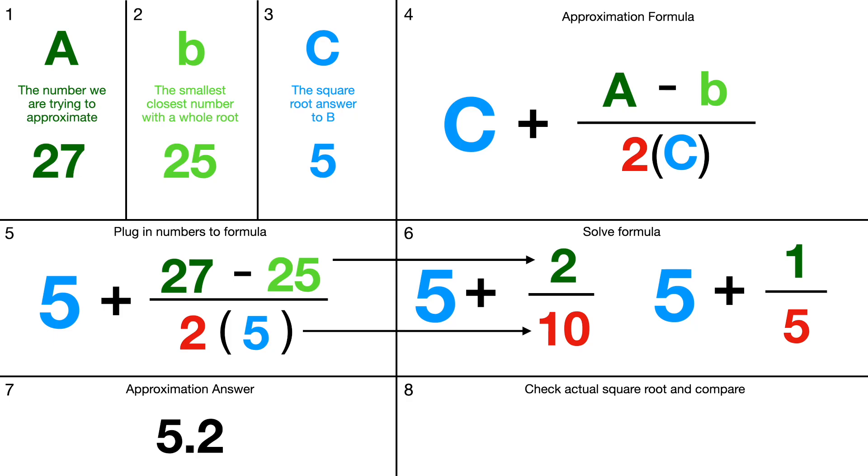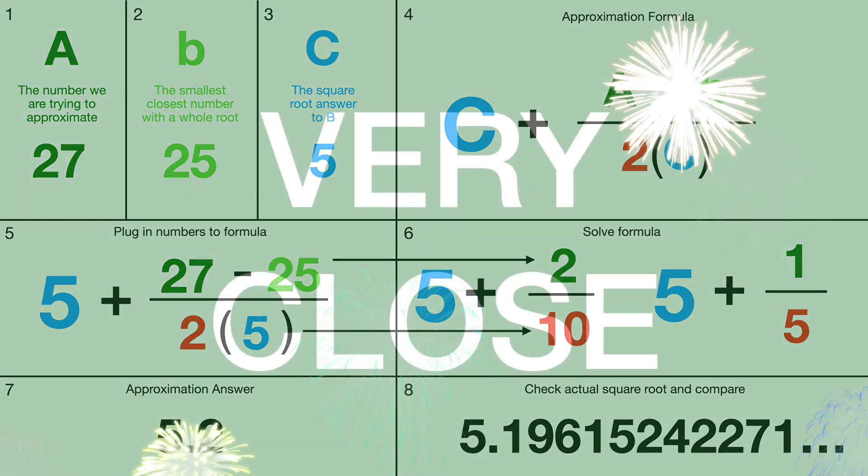It doesn't always have to go two digits, but if it goes more than that, we'll just round it to two. Now we check the actual square root and compare. If you plug it into a calculator, you get 5.1961. We got 5.2 and 5.1961, so that's very close. We did a very good job approximating it.